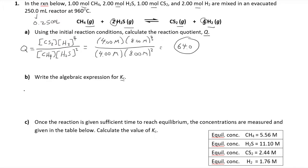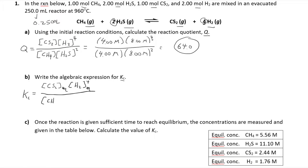Now we need to write the algebraic expression for K. In this case, Kc deals with molar concentrations. If I gave you Kp, that's typically just another expression using partial pressures, but it's all about the equilibrium constant. The expression has the same form — carbon disulfide, hydrogen gas to the fourth power — but this time the concentrations must be the equilibrium concentrations. The molar concentration at equilibrium is what we use to calculate the equilibrium constant.